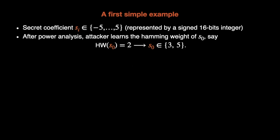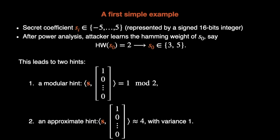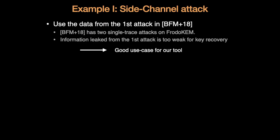Consider a secret coefficient Si between minus 5 and 5. After a power analysis, an attacker can learn the hamming weight of S0, for example. Say, hamming weight of S0 equals 2. Then, there are only two choices for S0, either 3 or 5. This is quite a significant information, and we can include it with hints. A first modular hint can reduce the possibilities modulo 2, and a second approximate hint can focus the distribution around 4. This can be generalized to other side channel attacks.